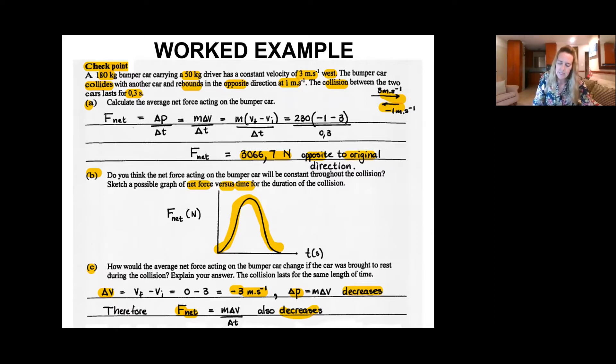So there's a 180 kilogram bumper car carrying a 50 kilogram driver. So you have to add these two masses, that will give you 250 kilograms in total. It has a constant velocity of three meters per second west. So the constant velocity there, initially, it's moving at that velocity. So that's the V initial.